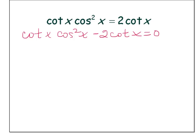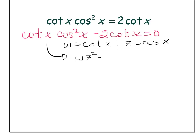Now we can think of this as different terms. Sometimes students look at cotangent, cosine, cotangent all together and get really confused on what to do. Let me show you a way to think about this that may help you see something that you wouldn't ordinarily see. Suppose I let w equal cotangent x and I let z equal cosine x. Then what I'm really looking at is w·z squared minus two w equals zero — cotangent becomes w, cosine squared becomes z squared, and minus two cotangent becomes minus two w.